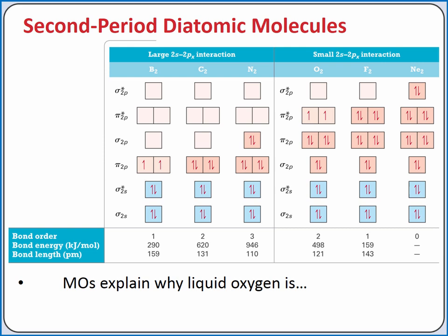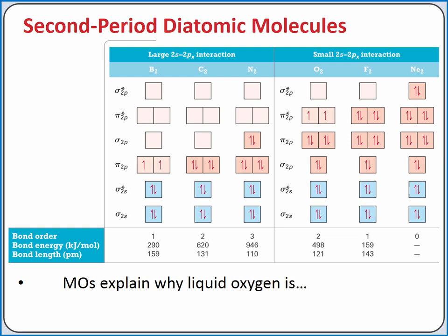Molecular orbital theory can also help us explain why liquid oxygen is paramagnetic. Looking at the molecular orbital diagram for oxygen, there are two unpaired electrons in the pi 2p antibonding molecular orbitals. The presence of unpaired electrons makes a substance paramagnetic — something we would not have predicted from the Lewis structure or even from valence bond theory.